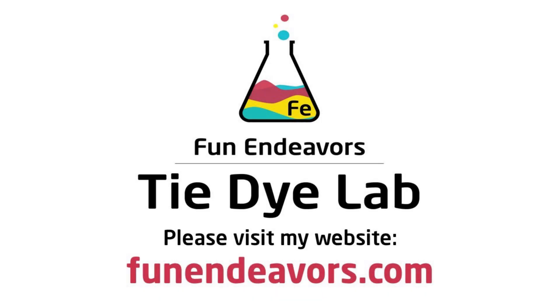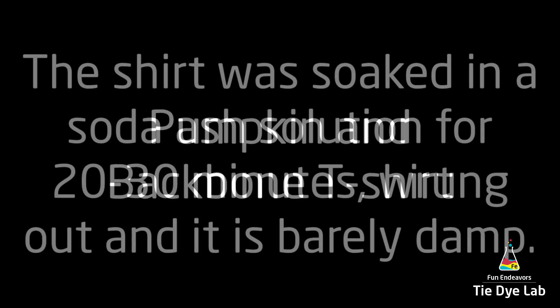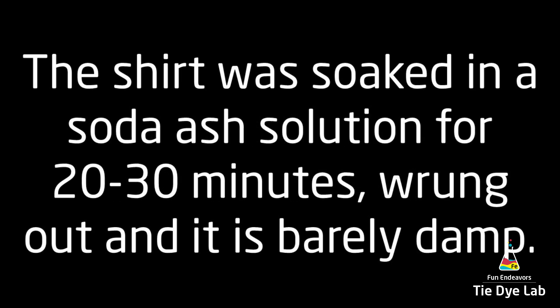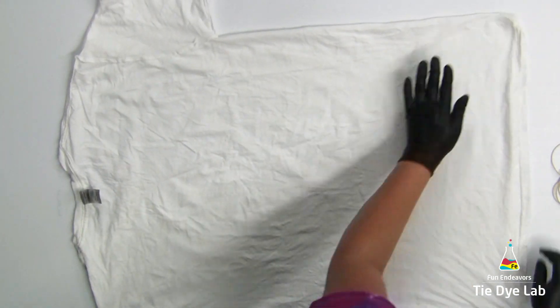Hi guys, it's Angie with Fun Endeavor's Tie-Dye Lab. Today I'm going to make a pumpkin shirt and I'm going to put a pattern on the backbone area. The shirt was washed and dried, soaked in a soda ash solution for at least 20 to 30 minutes, then I wrung it out in my panda spin dryer so it's just barely damp. It's also turned inside out.